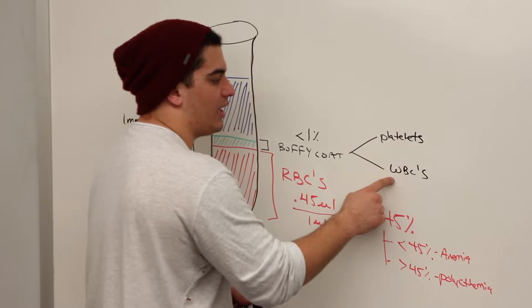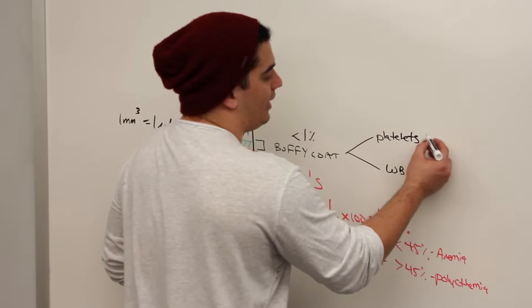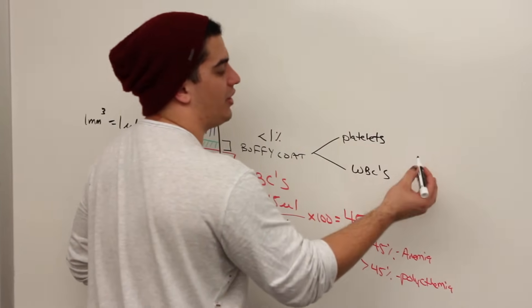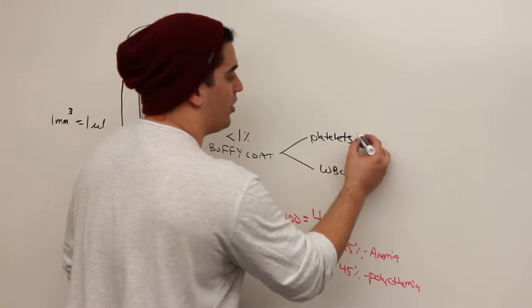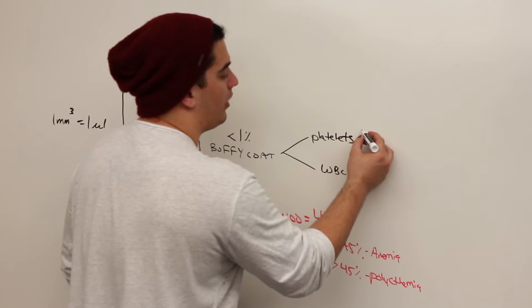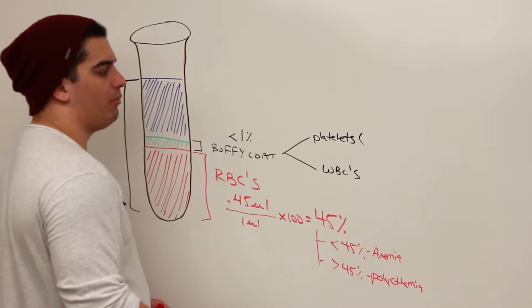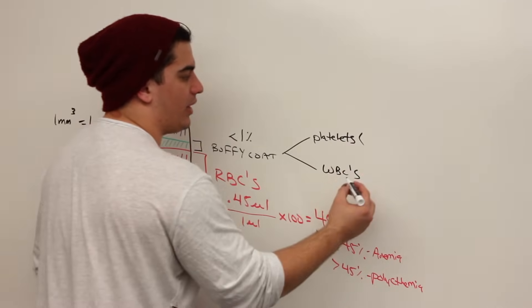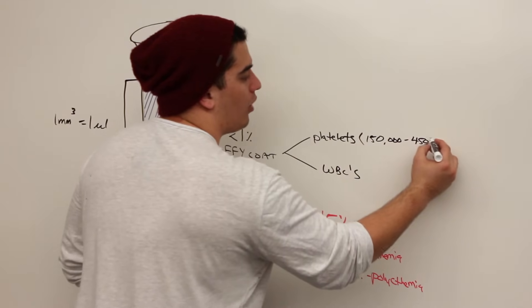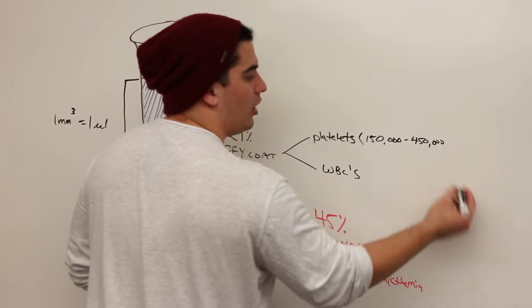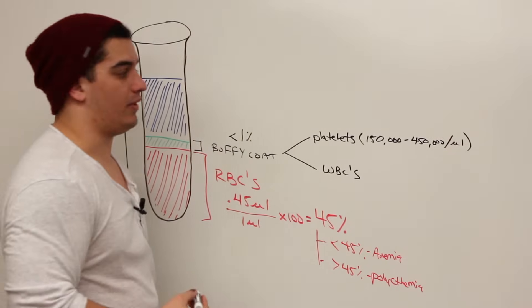Now, the buffy coat consists of platelets and white blood cells. Platelets, if you take these guys, what are their functions? Their functions are designed to be able to plug up any type of damaged blood vessels. How many platelets, if you take that millimeter cubed of blood, how many platelets would you find within that? You'd find about 150,000 to about 450,000 per microliter of blood. That's about how much you'd find.